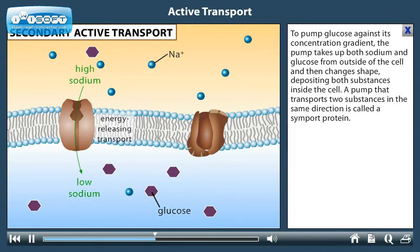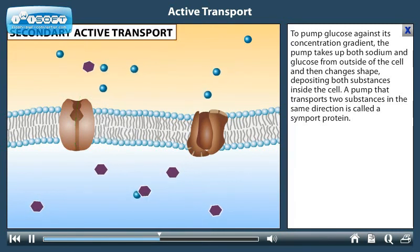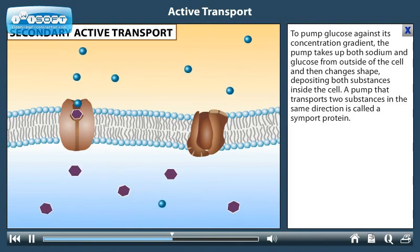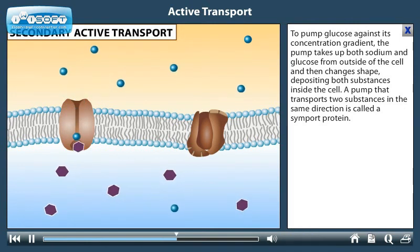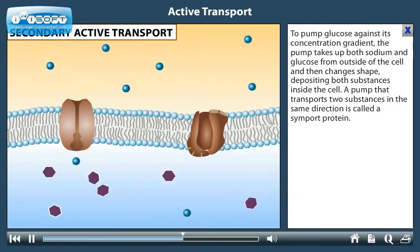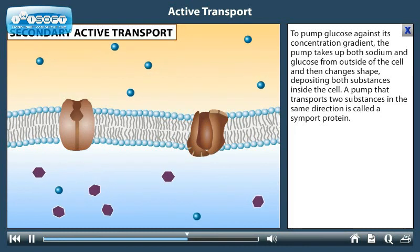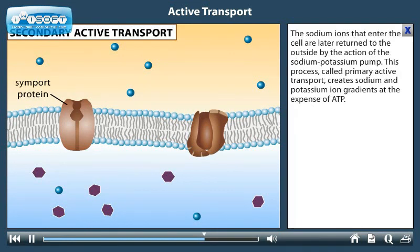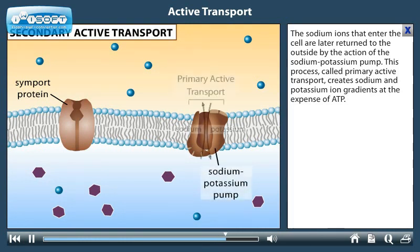To pump glucose against its concentration gradient, the pump takes up both sodium and glucose from outside of the cell and then changes shape, depositing both substances inside the cell. A pump that transports two substances in the same direction is called a symport protein. The sodium ions that enter the cell are later returned to the outside by the action of the sodium-potassium pump. This process, called primary active transport, creates sodium and potassium ion gradients at the expense of ATP.